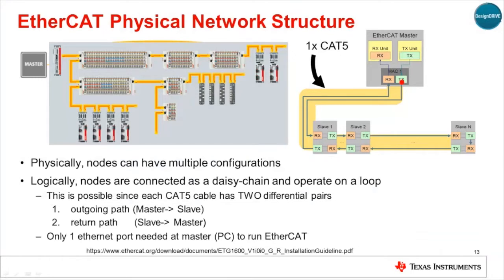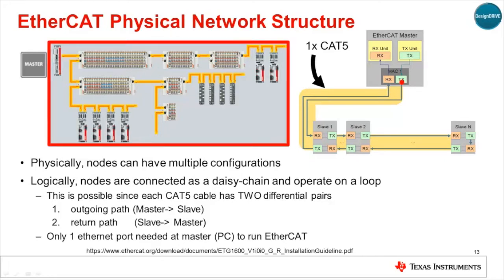EtherCAT is an Ethernet-based Fieldbus standard targeted at real-time requirements for automation. It is designed to achieve very low update or cycle times, typically less than 100 microseconds, with low jitter less than 1 microsecond. Physically, the nodes of an EtherCAT network can be connected in a number of configurations, as illustrated in the diagram at the upper left.